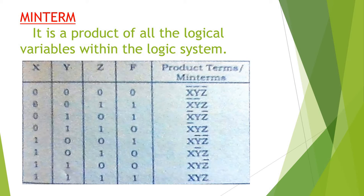Today we are going to learn about two important terms in Boolean algebra: minterm and maxterm. First, minterm. Minterm is a product of all the logical variables within the logic system. Product means multiplication — product of all the logical variables within the logic system.